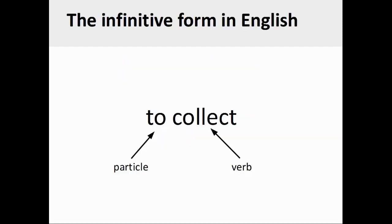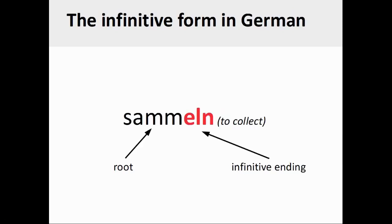There are two components to the full infinitive construction in English: the particle 'to,' which precedes the verb, and the verb itself. German, however, usually does not rely on a particle to form the infinitive, although one could say that the German infinitive form has two components: the verb root and the infinitive ending.